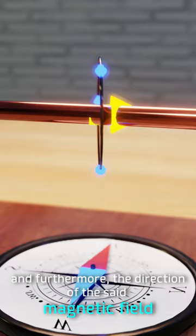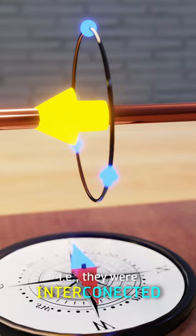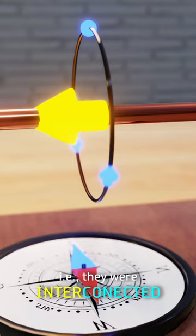This showed that the electric current in the wire was generating a magnetic field, and furthermore, that the direction of that field depended on the direction of the current generating it. In other words, they were interconnected.